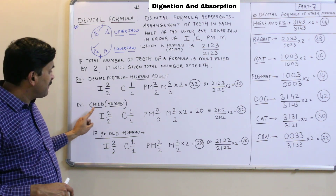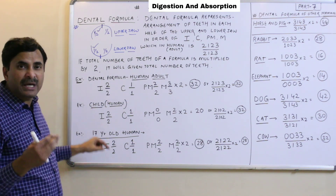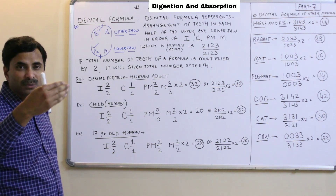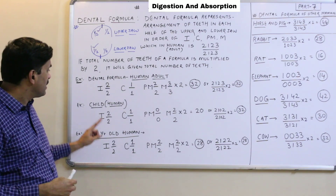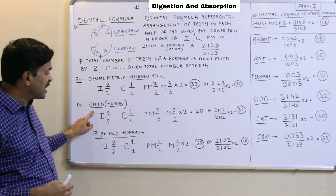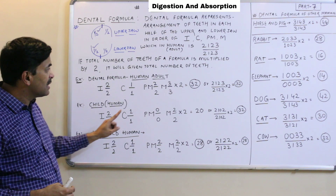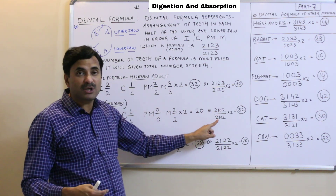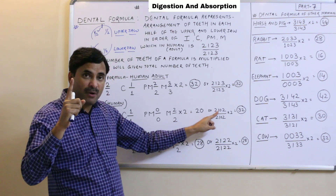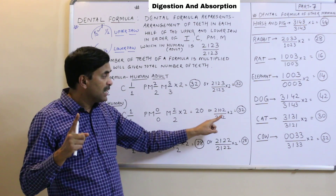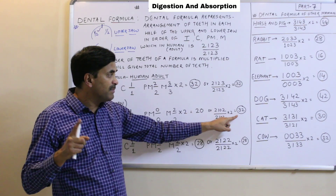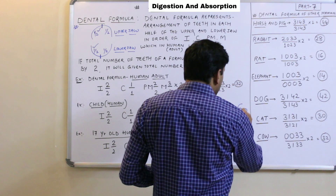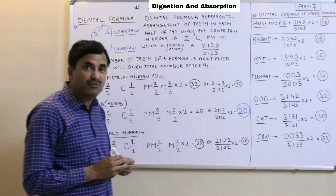Now for a human child — age group of 2, 3, or 4 years, meaning below 8 or 9 years — the dental formula is 2, 1, 0, 2 upon 2, 1, 0, 2, representing one half of the upper jaw and one half of the lower jaw. If we multiply by 2, we get a total of 20 teeth.